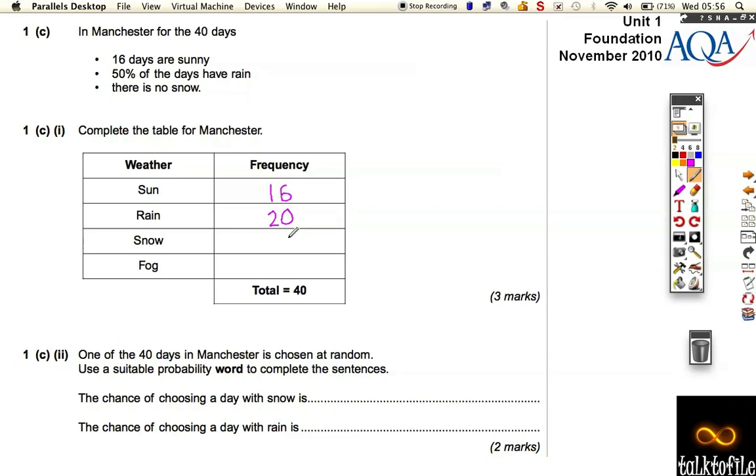It says there's no snow, so you've got a zero. But our total's got to be 40 again, so we've added these up and we realize that total's 36. So there must be four days of fog. That's a quite straightforward three marks there.